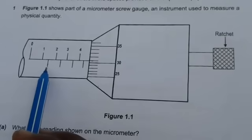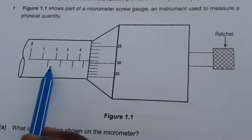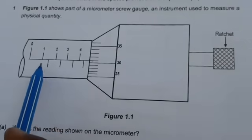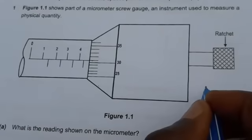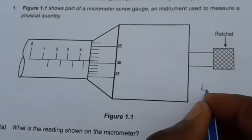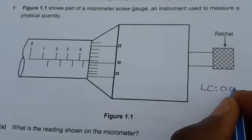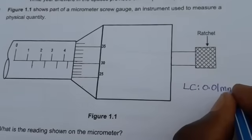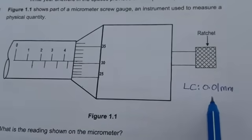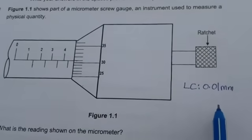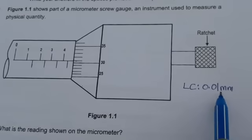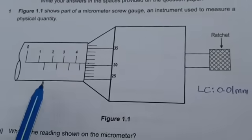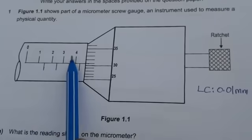First of all, you need to take the measurements from the sleeve scale. It is also important for you to note that this instrument has the least count of 0.01 millimeters. This is the smallest measurement that this instrument can take.